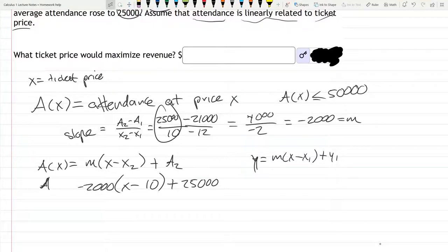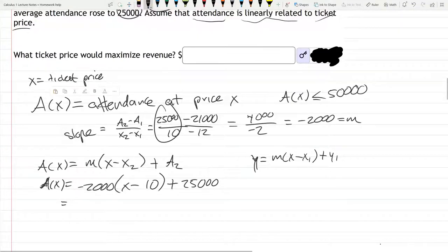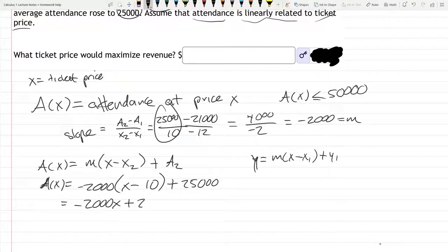This is the attendance, not the amount of money we're making. This might look nicer if we distribute: negative 2,000X, and 10 times 2,000 is positive 20,000, plus 25,000 gives us 45,000. So A(X) equals negative 2,000X plus 45,000.